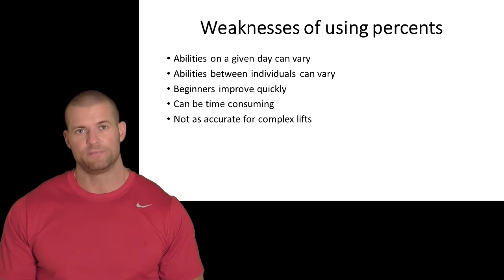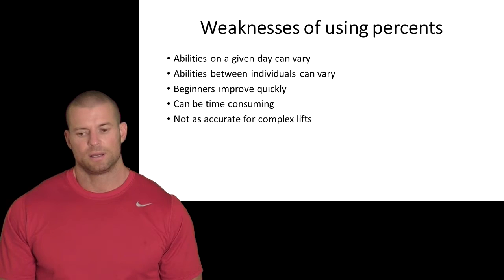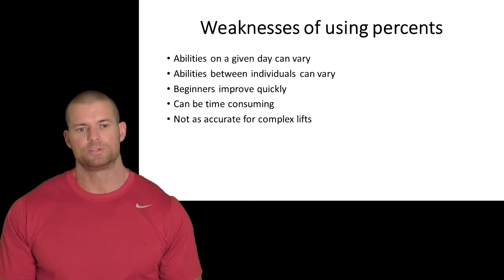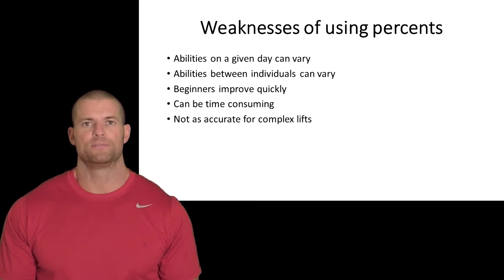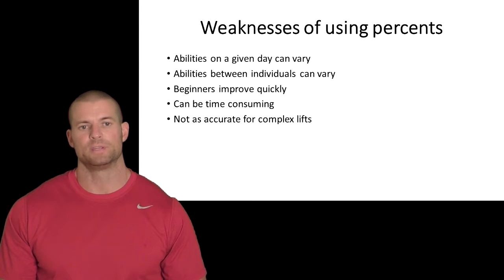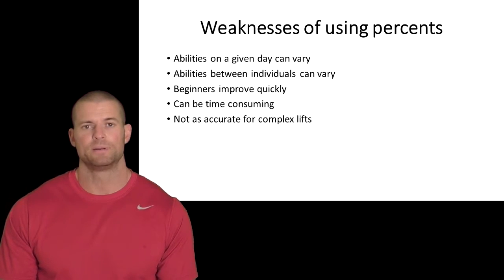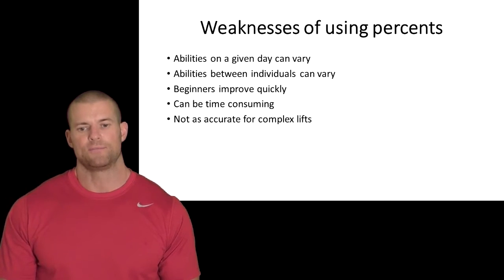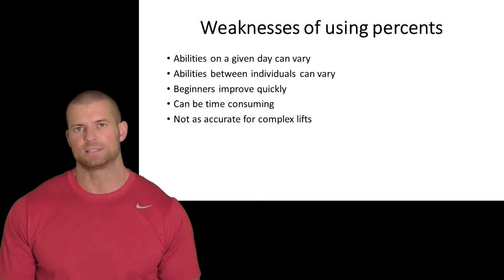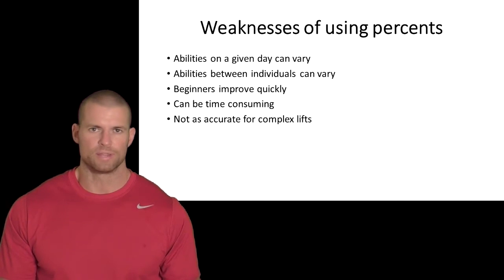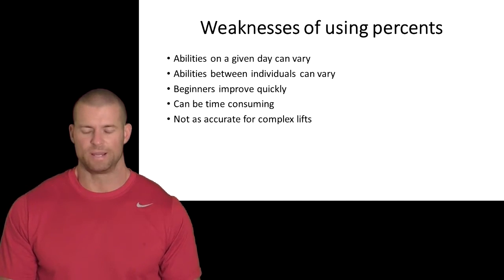Abilities between individuals can also vary. Someone might be able to accomplish four reps at 90% of their maximum, while the next person can only get two and a half. Everyone's a little bit different with fast and slow twitch muscle fiber composition.